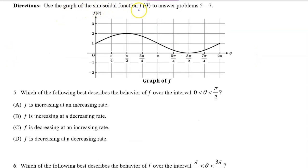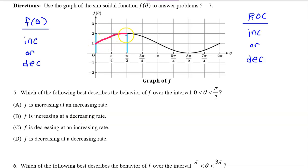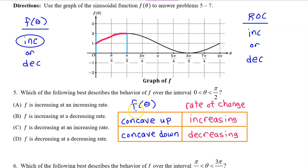Use the graph of the sinusoidal function f of theta to answer problems 5 through 7. Number 5: which of the following best describes the behavior of f over the interval from 0 to pi over 2 — is f increasing or decreasing, and is the rate of change increasing or decreasing? I've highlighted that interval. f is clearly increasing. On this interval, f is concave down, so the rate of change is decreasing. In other words, f is increasing at a decreasing rate. The answer is b.